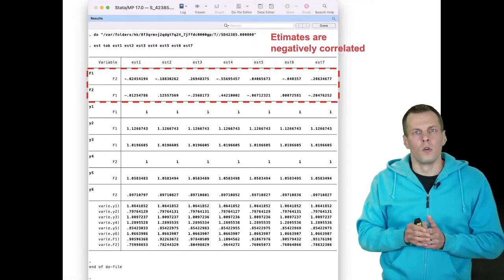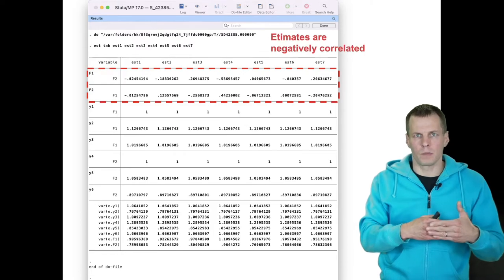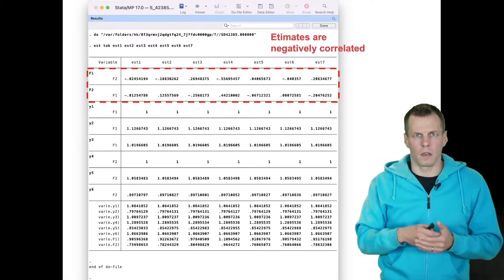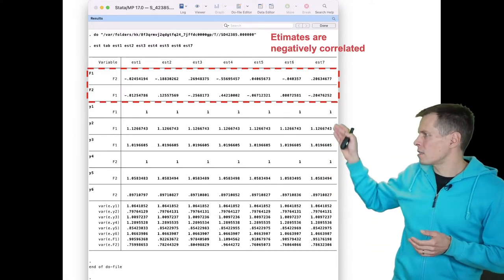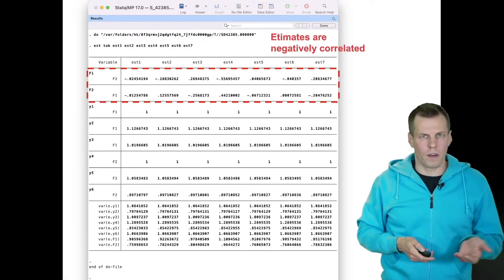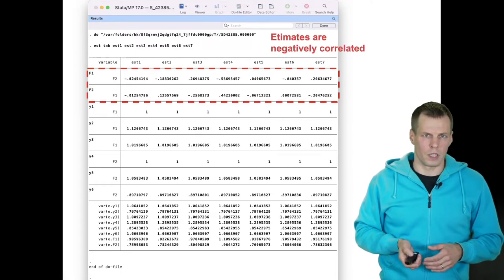That means that there's an identification issue involving these two parameters. In other words, we know that these parameters together are responsible for the correlation between F1 and F2, but we don't know which one it is. That's the identification problem. So all the measurement parameters, the factor loadings and indicator error variances are identical. So there are no identification issues there.